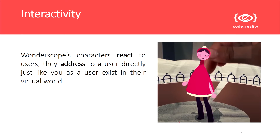All AR apps involve some form of interactivity. Interactive events in Wonderscope are triggered by clicking on UI, clicking on virtual objects, and by saying specific phrases. But even with UI elements, it's always played out so that virtual characters address you like they see you and hear you — as if these characters are also alive and present in the real world.